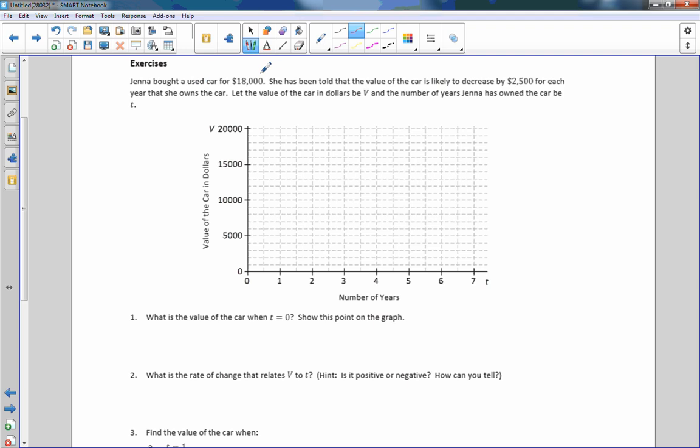Exercises. Jenna bought a used car for $18,000. She has been told that the value of the car is likely to decrease by $2,500 for each year that she owns the car. That is a constant rate of change, so it's linear. Let the value of the car in dollars V and the number of years Jenna has owned the car to be T. My T is my X, my V is my Y. And my rate of change is right here, my slope.